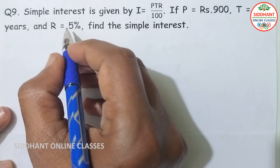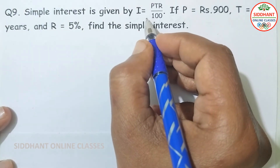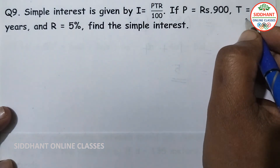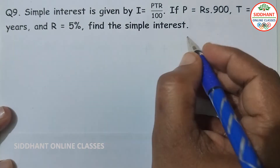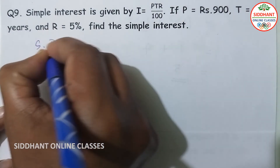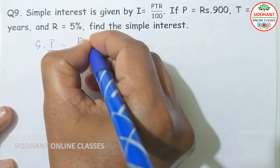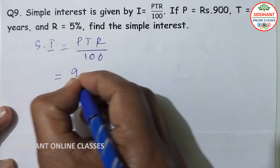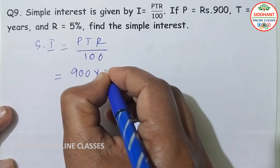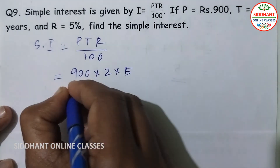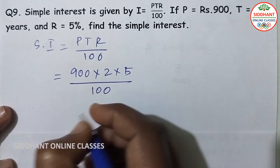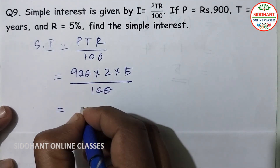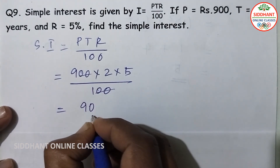Question number 9: simple interest is given by SI equals PTR by 100. If P is 900, T is 2, and R is 5 percent, find the simple interest. SI equals 900 into 2 into 5 by 100, which gives 90.